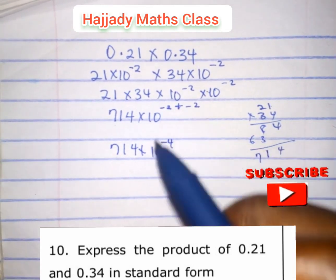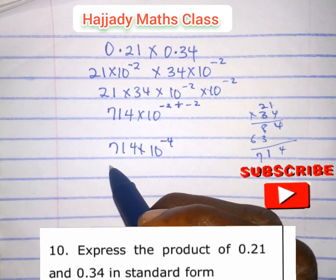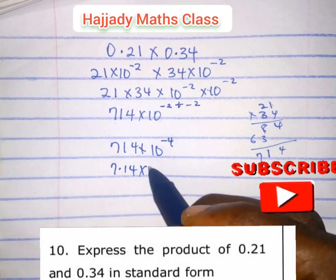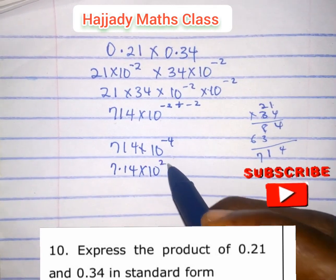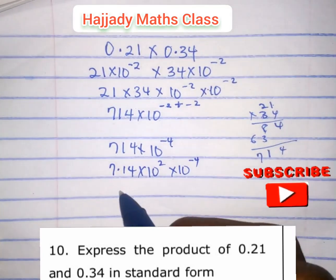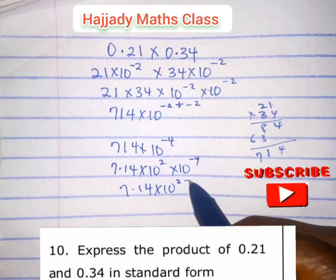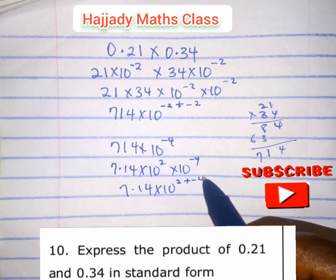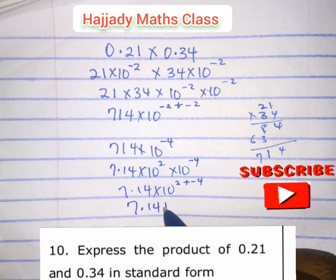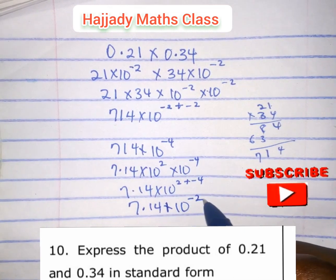Minus 2 minus 2 gives minus 4. So changing this back to standard form, we have 7.14 times 10 raised to the power 2, times 10 raised to the power minus 4. This gives 7.14 times 10 raised to the power 2 plus minus 4, which is 7.14 times 10 raised to the power minus 2.